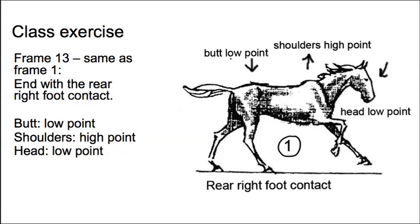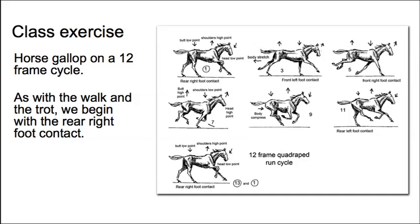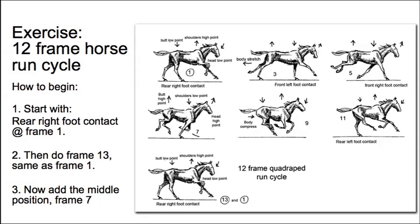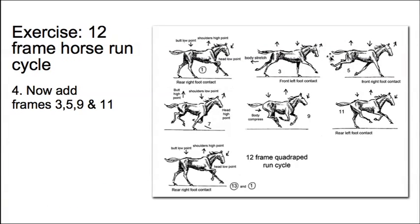Like the other exercises, you really want to print out this information and have it in front of you so you can see what you're doing as you animate. Resist the temptation to keep it as a JPEG on the screen — you will not look at it. It's easy to drift away from the poses, and it's very important that all these poses look attractive on the horse. The basic process is to start with frame one, set a keyframe at frame thirteen, and make sure they are the same. Middle-mouse drag frame one to frame thirteen, then hit S to copy those curves. Next, do the middle position at frame seven, then fill in three, five, nine, and eleven.